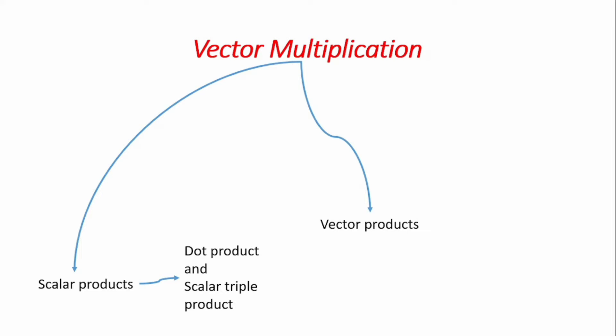Vectors can also have vector products. We have the cross product, which involves vector multiplication of two vector quantities, and vector triple products that involve multiplication of three quantities. The cross product is really vital — we'll come back to it when looking at moments, to see how you can multiply vector quantities.